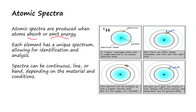In atomic spectra, whenever energy is absorbed or emitted, electrons generally move from one energy level to another. The movement of those electrons from one energy level to another is what actually leads to the generation of a unique spectra. That is why each and every element has its own unique spectra, allowing for identification and analysis.